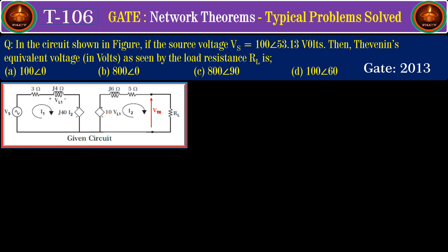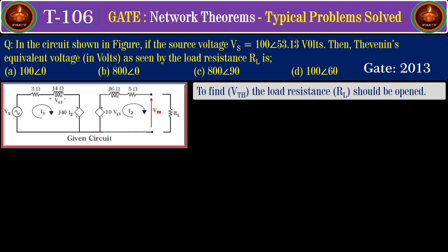Next, we shall solve the question from GATE 2013. The source voltage VS equals 100 angle 53.13 volts and we are required to identify the Thevenin's equivalent voltage. To find the Thevenin's equivalent voltage, the load branch should first be opened. Once the load branch is open, certain changes take place in the circuit, and identifying those changes is an important skill.